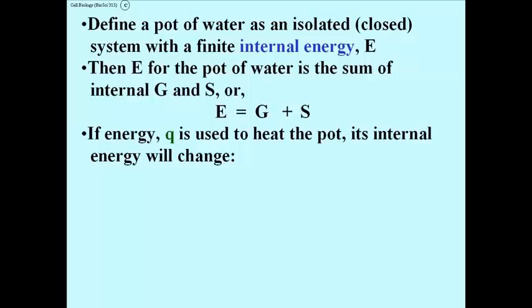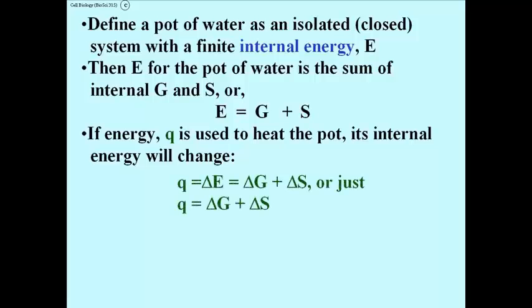If we put energy into the pot to heat it, the internal energy of the pot will change. We can put a thermometer into the water and watch the temperature rise as we heat it. For every increase of one degree in a milliliter of water, the water has absorbed one calorie — that's the definition of a calorie. So if Q is the energy used to heat the pot, Q equals the change in free energy plus the change in entropy: Q = delta G + delta S.